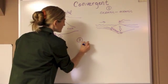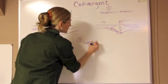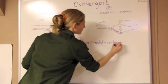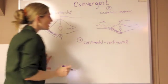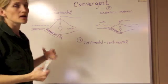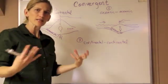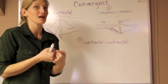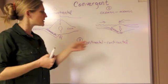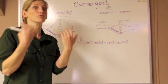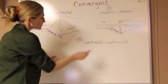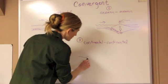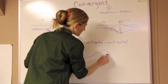The third type of convergent boundary is when we have two continental plates coming together. When you have two very low-density, very buoyant pieces of lithosphere colliding, neither one wants to subduct. So we get this big pressure building up. We see the formation of a lot of earthquakes and really big mountains as the end product.